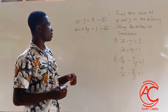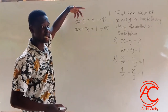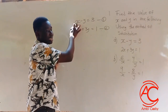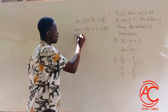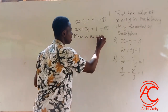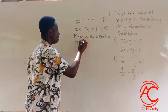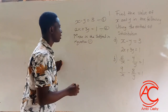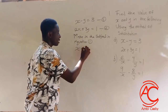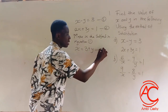With the method of substitution, you pick one of the equations and make one of the variables the subject. So if I pick equation 1, I'm going to make x the subject. Doing that, I get x is equal to 3 plus y. This will be equation 3.